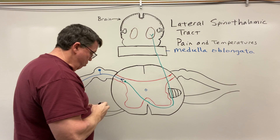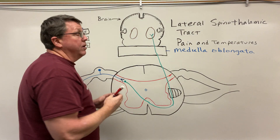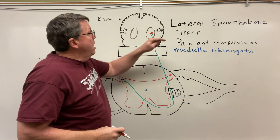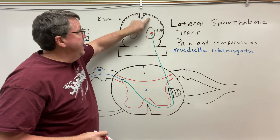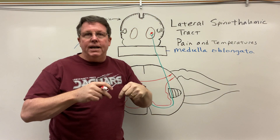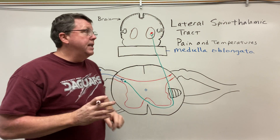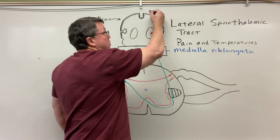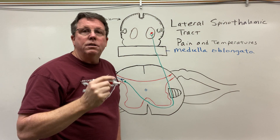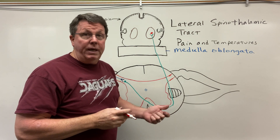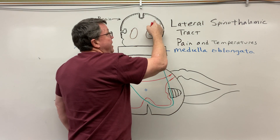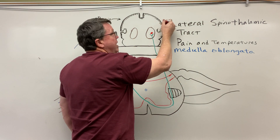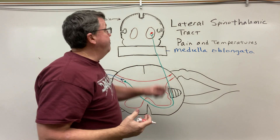Once it's in the thalamus, it's going to synapse with another nerve. I have lines drawn along the outside of this brain — this is the outer portion called the cerebral cortex. In this case, you have something called the primary somatosensory cortex located in this part of the cerebral cortex. The primary somatosensory cortex is responsible for feeling sensations such as pain. Different parts of it are responsible for different parts of the body — the part that feels pain from the hand is located right around this area here, and if the pain was coming from your foot it would be somewhere up in here.